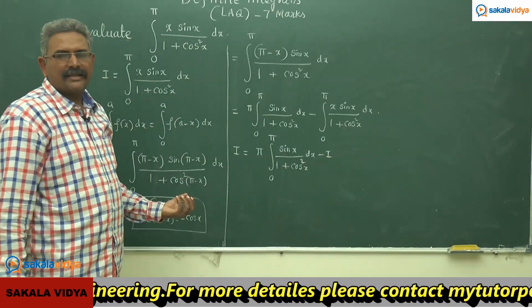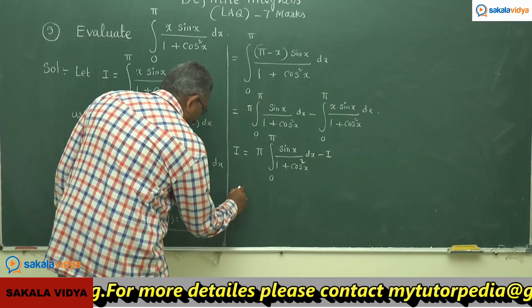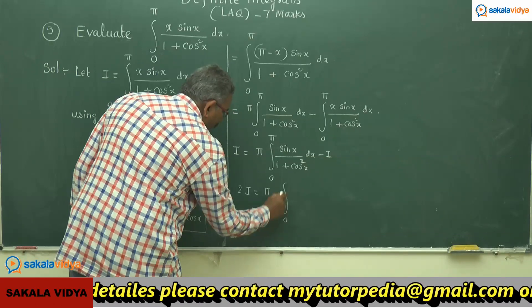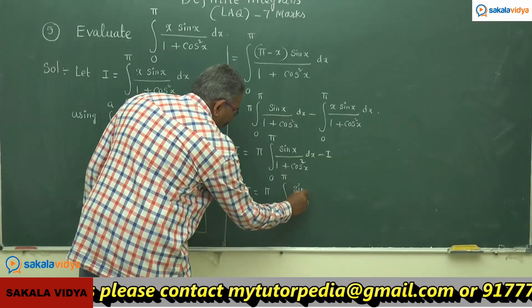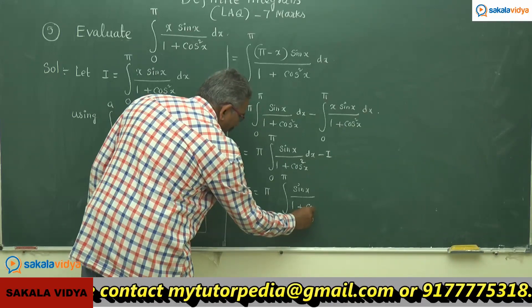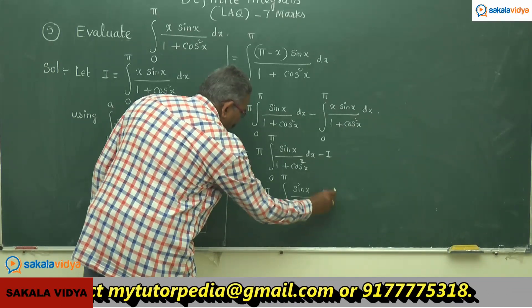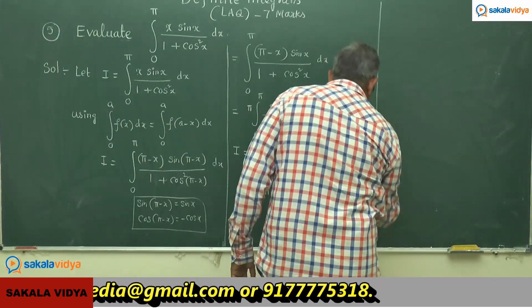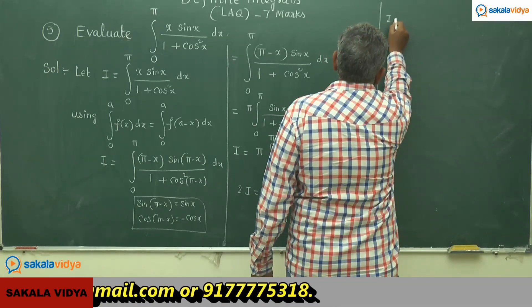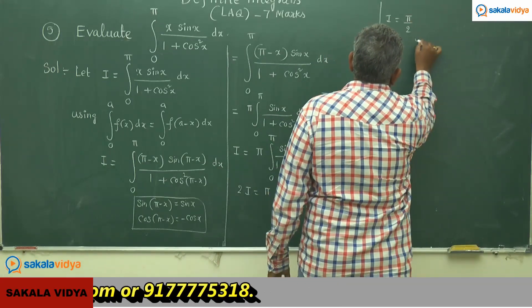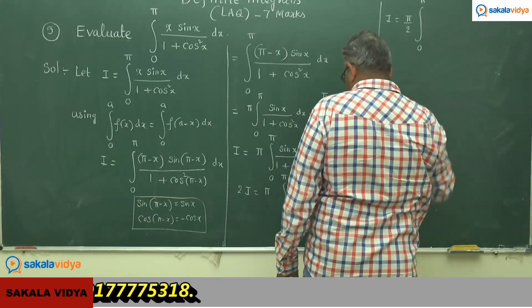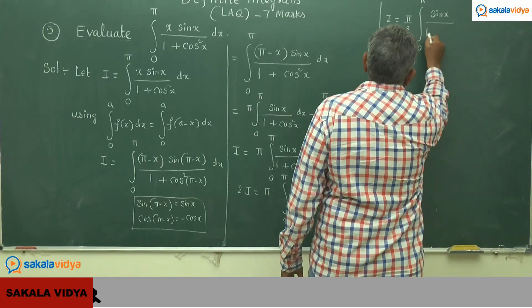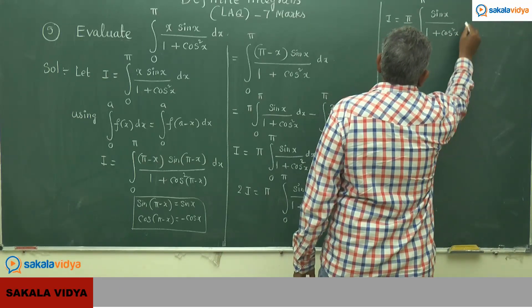Transposing minus I to the left hand side, we get 2I equals π times integral from 0 to π of sin(x) / (1 + cos²x) dx. So I becomes (π/2) times integral from 0 to π of sin(x) / (1 + cos²x) dx.